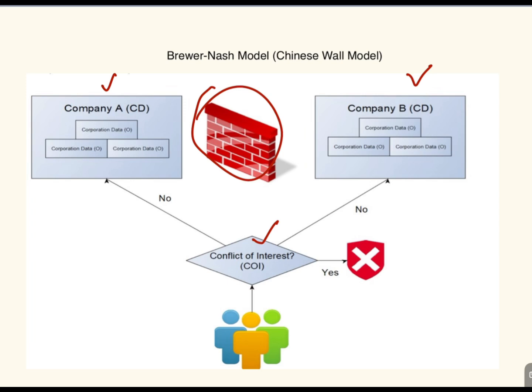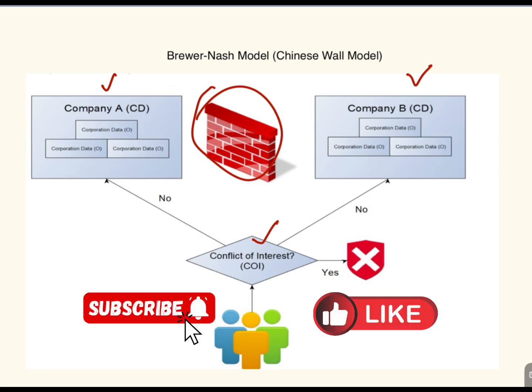If a conflict is detected, access is denied. In a real-world example from investment banking and financial services, a financial analyst working for client A cannot access client B's confidential information. This prevents insider trading and ensures ethical separation of business interests — and that is the main purpose of the Brewer-Nash model.